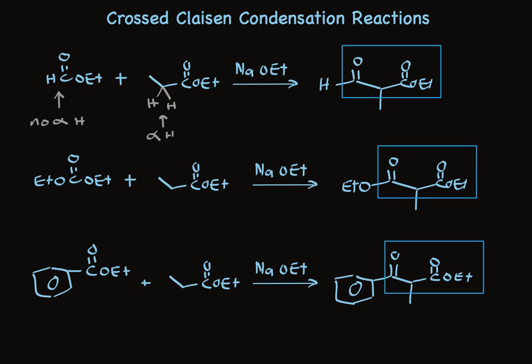Again, it's a beta-ketoester. We have the same three carbons in the box. On the two carbon, we have a methyl group. And directly attached to the ketone, we have a phenyl group. These are three of the very most common reacting partners we have.